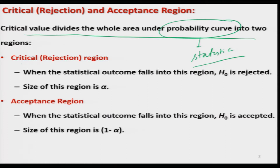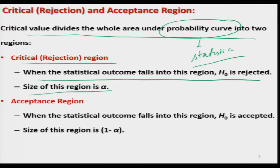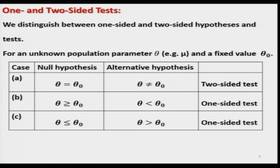One region is the critical region, also called the region of rejection. When the statistical outcome falls here, we say H naught is rejected, and the size of this region is alpha. The other is the acceptance region — when the statistical outcome falls here, H naught is accepted, and the size is 1 minus alpha. Hypotheses can be divided into two types: one-sided and two-sided tests.